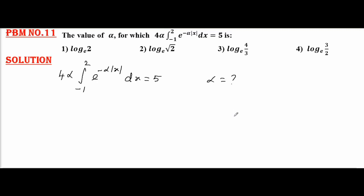Now, we will deal first with the integral. We will simplify the integral from -1 to 2 of e^(-α|x|) dx. So, mod x depends upon the value of x, when it is negative and positive, the value changes.